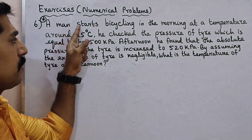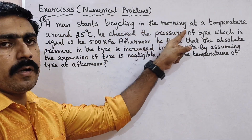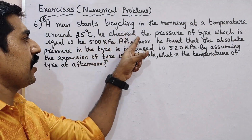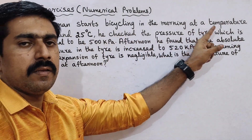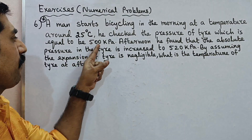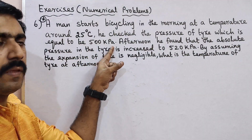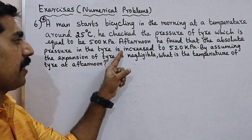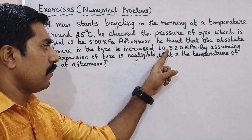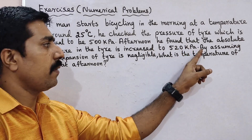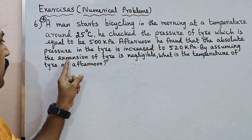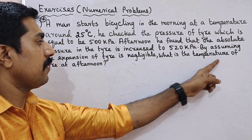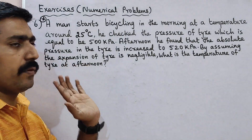A man starts bicycling in the morning at a temperature around 25 degrees Celsius. He checked the pressure of the tyre, which is equal to 500 kPa. In the afternoon, he found that the absolute pressure in the tyre increased to 520 kPa. By assuming the expansion of the tyre is negligible, what is the temperature of the tyre in the afternoon?